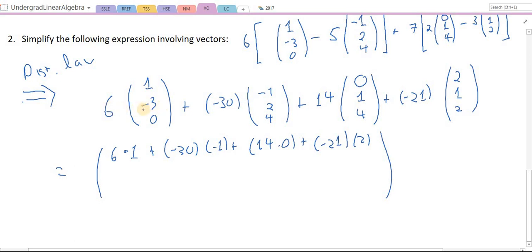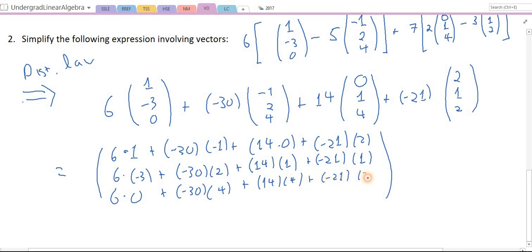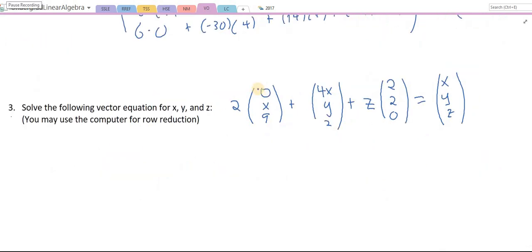If you organize it, it should be pretty straightforward. This one's going to be 6 times minus 3 plus minus 30 times 2 plus 14 times 1 plus minus 21 times 1. And then the last one becomes 6 times 0 plus minus 30 times 4 plus 14 times 4 plus minus 21 times 2. And you just work these out one by one. You can do that on your own using a hand calculator or whatever method you need.